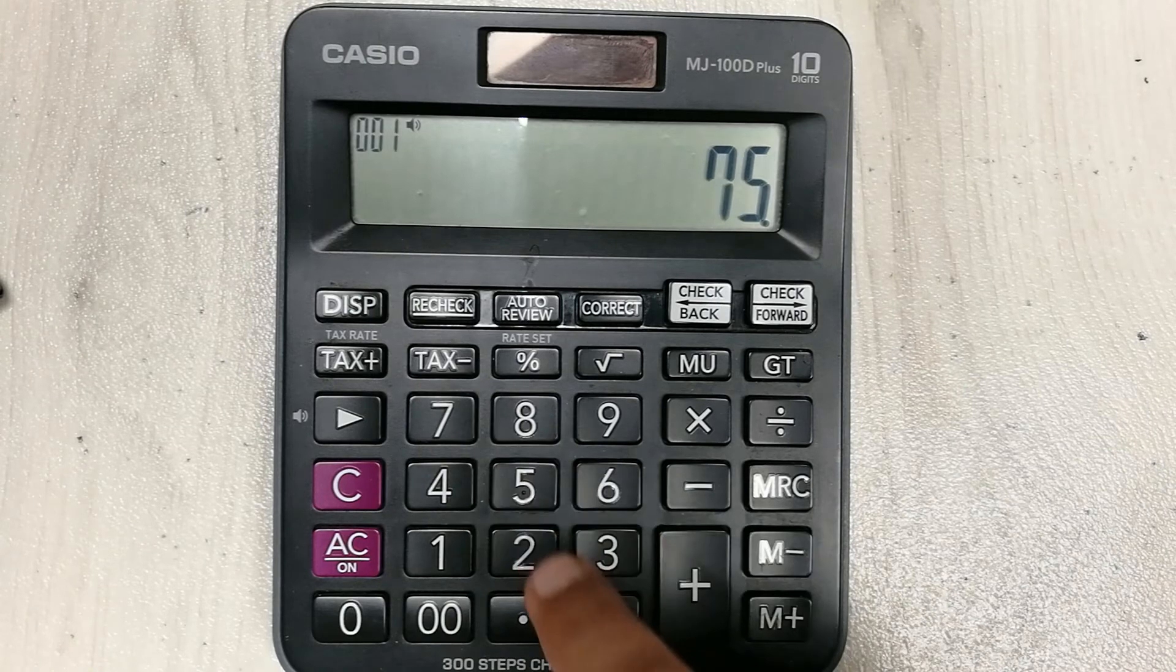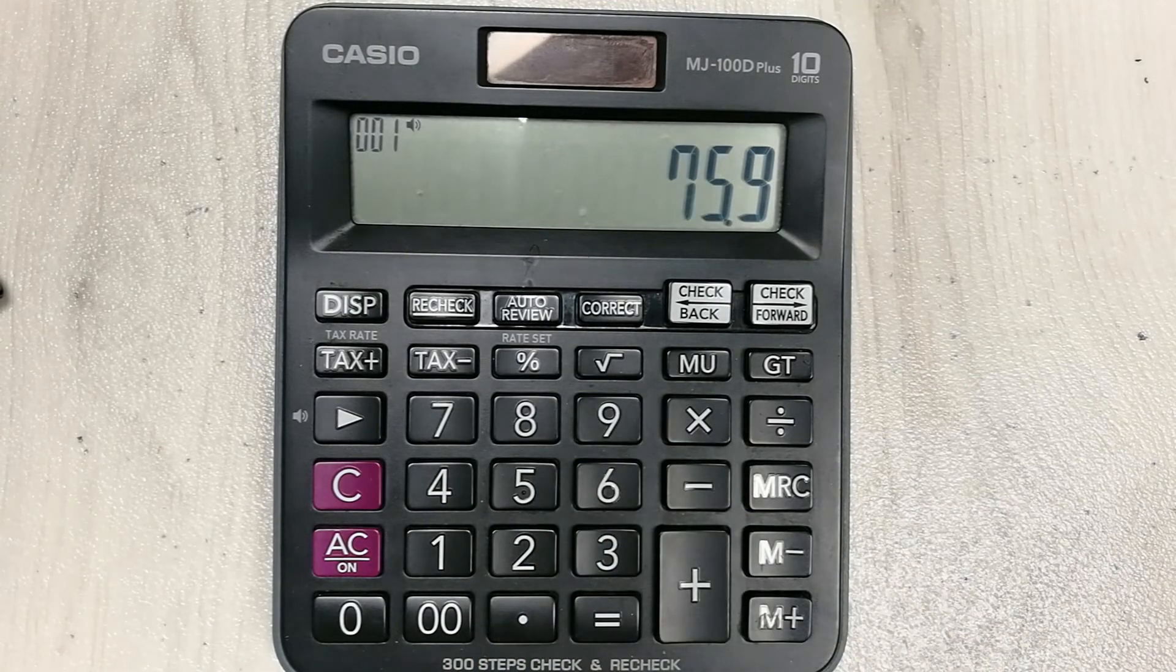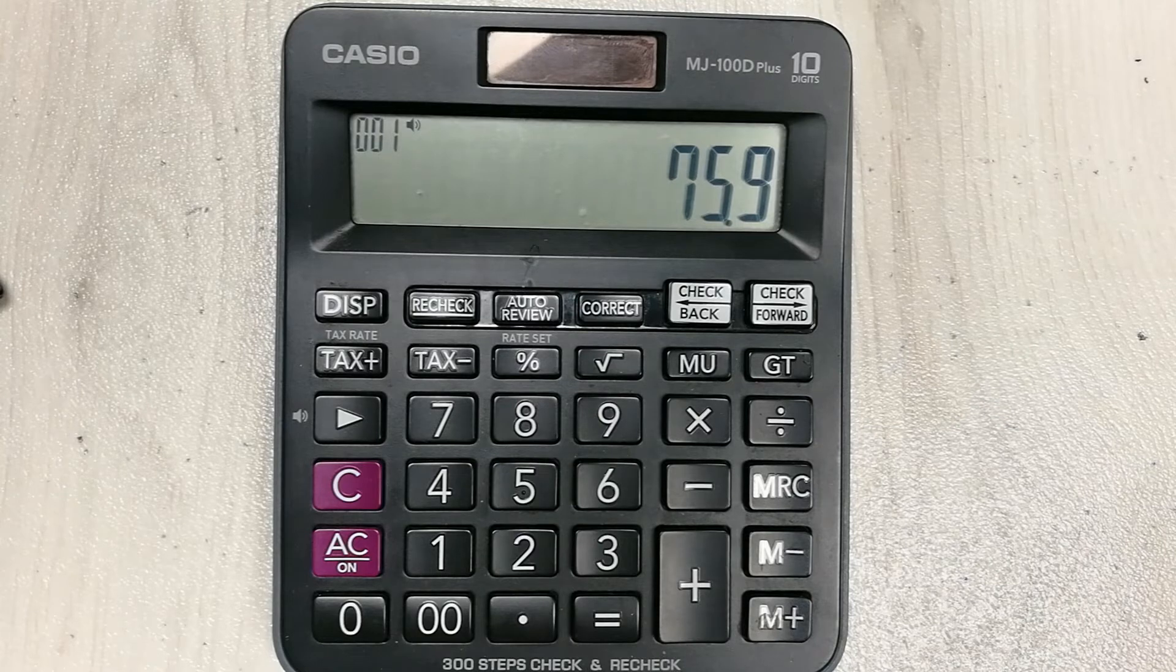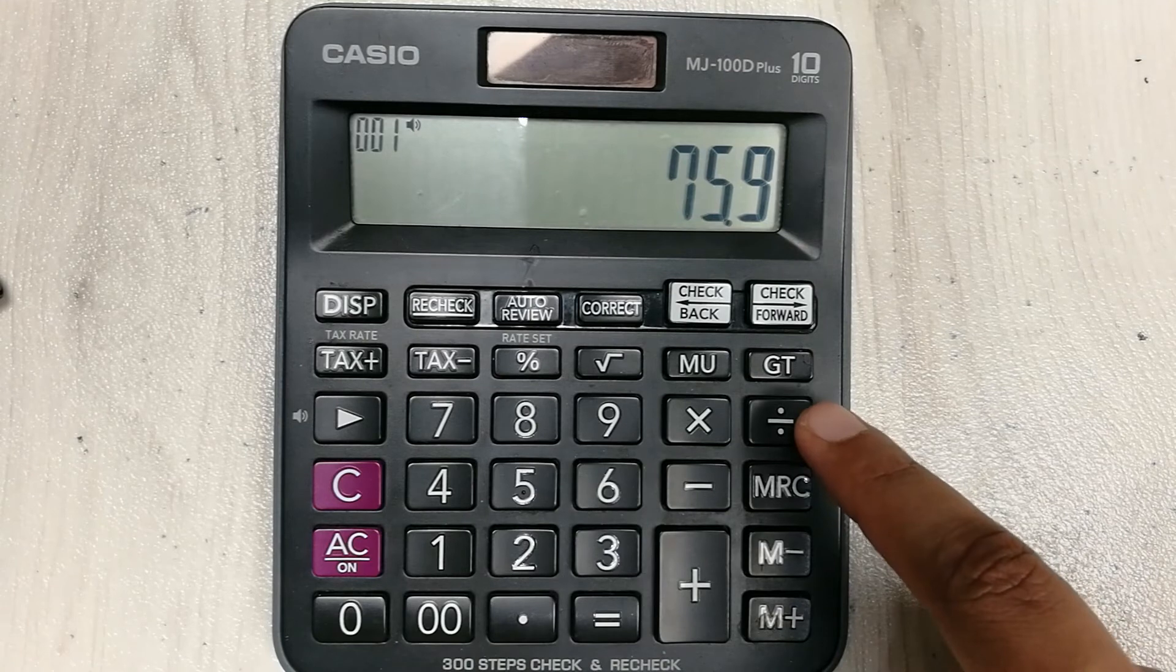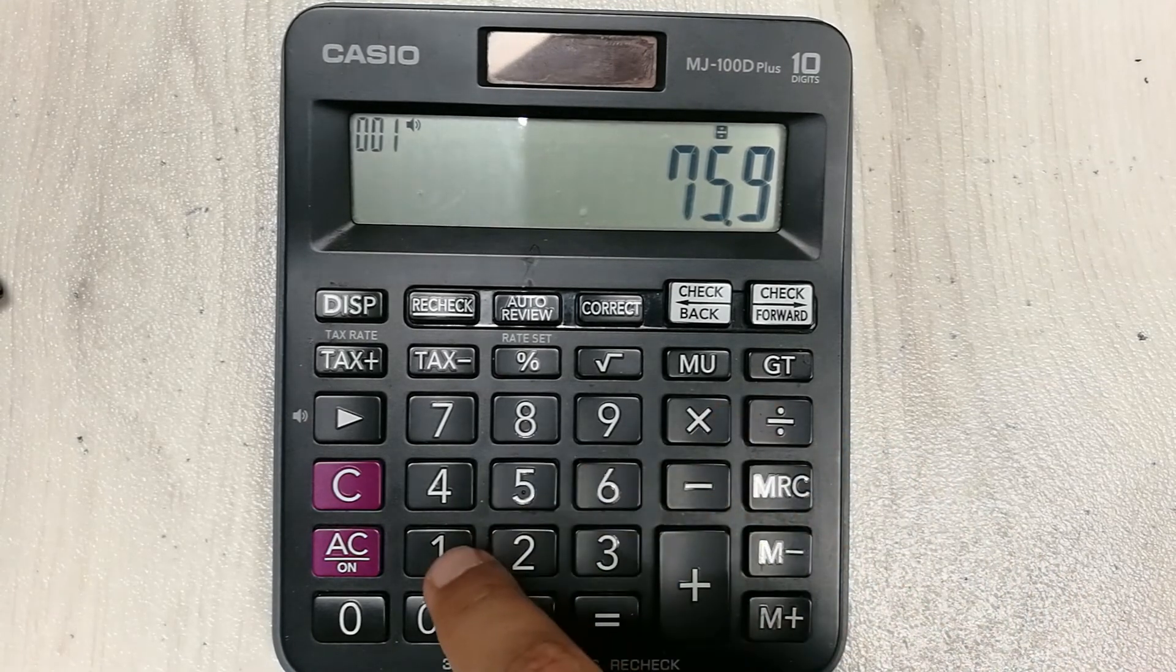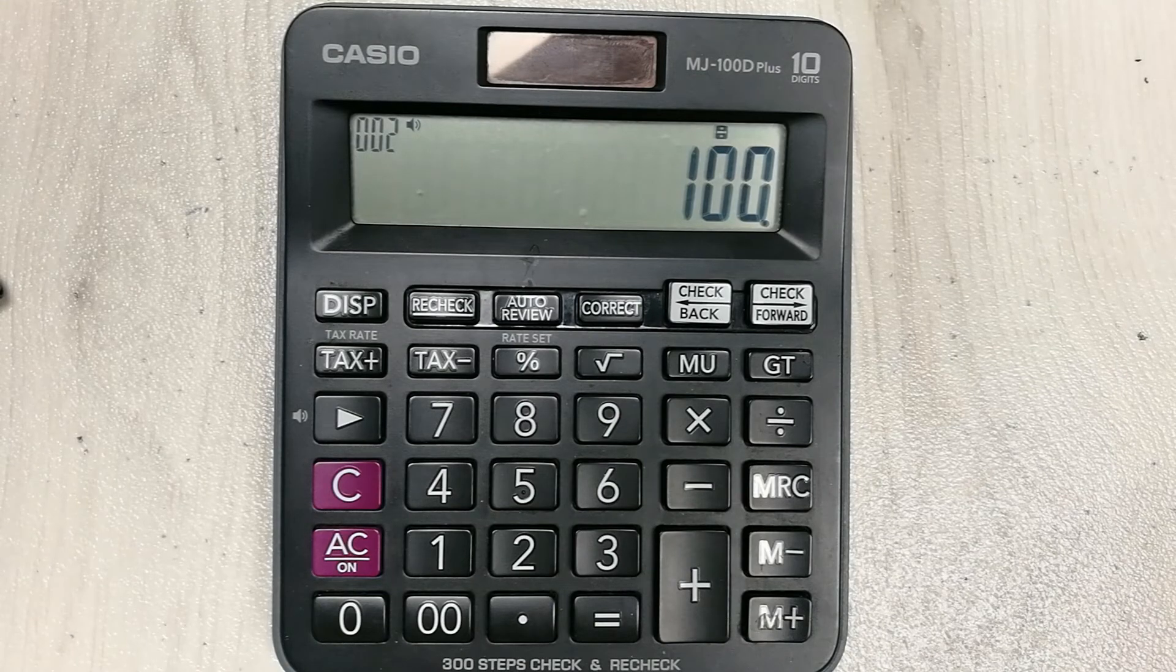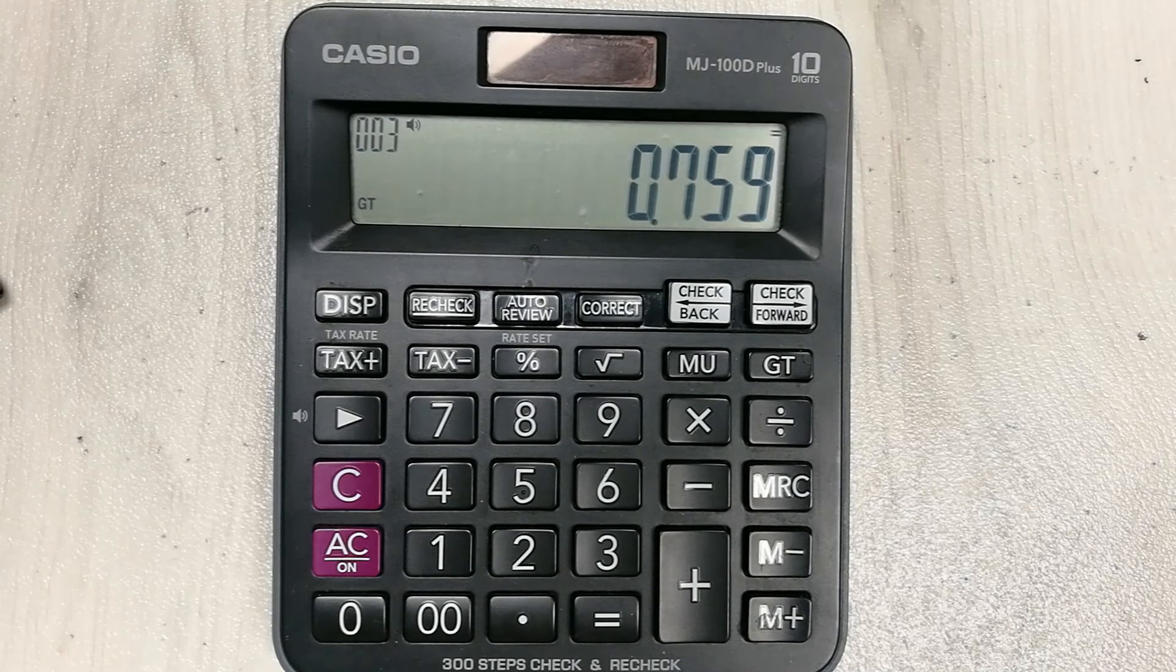Let's say I have 75.9 percent. I want to convert it into a decimal number. So what I will do is I press 75.9, I press divide, and I press 100 over here. So I divide 75.9 with 100, and then I press this equal button.